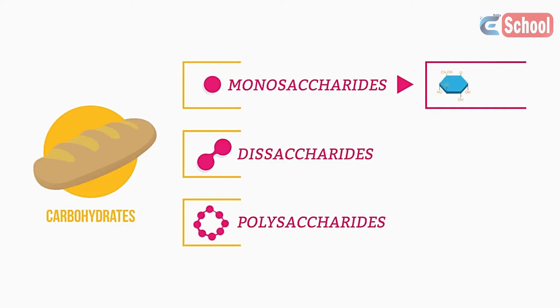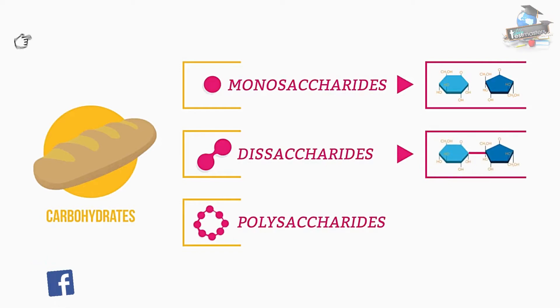Simple sugars like glucose and fructose are monosaccharides. Sucrose, which is made up of two simple sugars joined together, is a disaccharide.